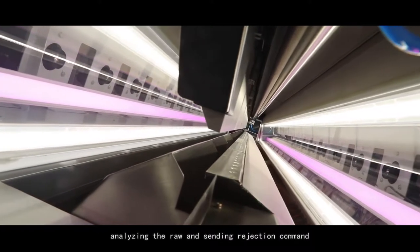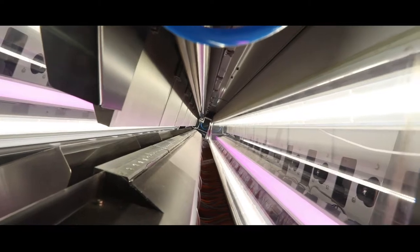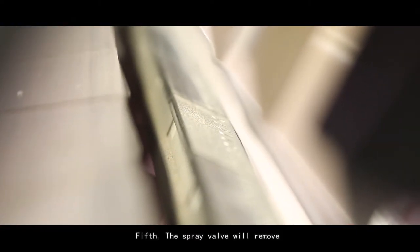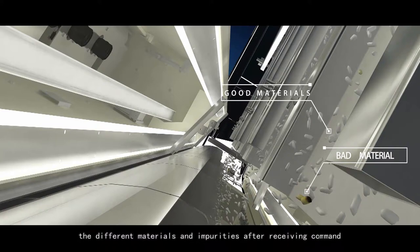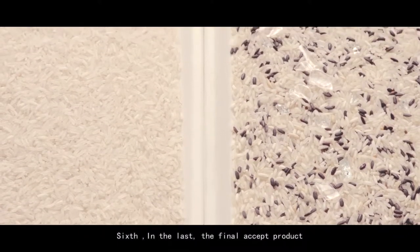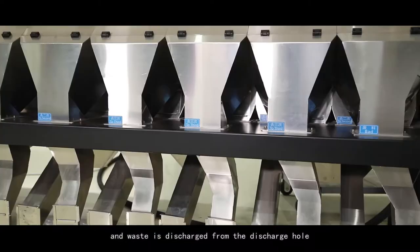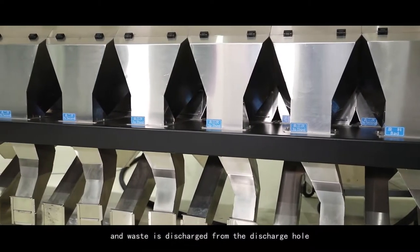Analyzing the raw and sending rejection command. Fifth, the spray valve will remove the different materials and impurities after receiving command. Sixth, in the last, the final accept product and waste is discharged from the discharge hole.